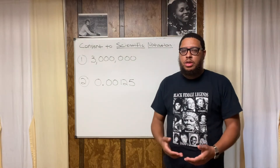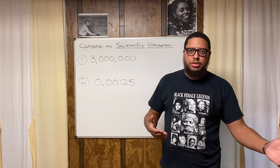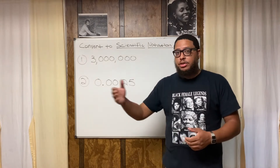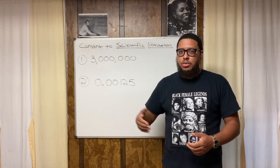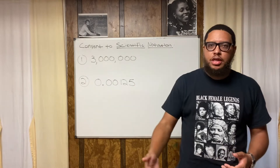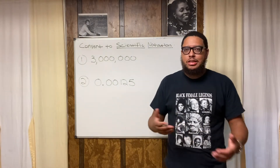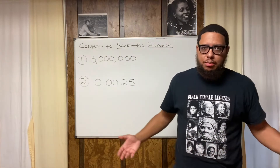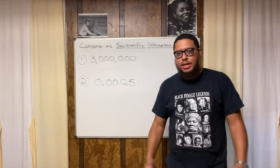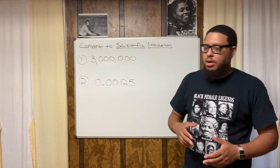I'm going to give you a step-by-step method to always be able to convert any number into scientific notation. Scientific notation is just another way to write a number. It's a language used in science and scientific processes. Similar to how you might have the metric system or standard time versus military time — it's just another way to write numbers, used widely in scientific processes and measurements.